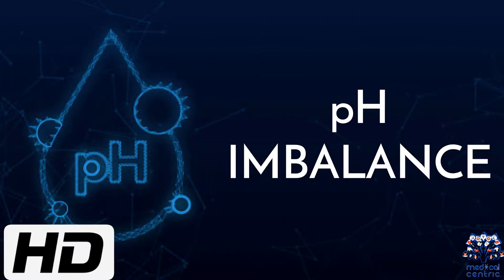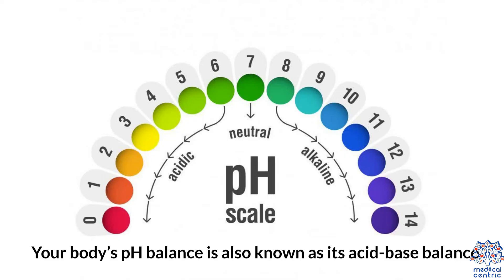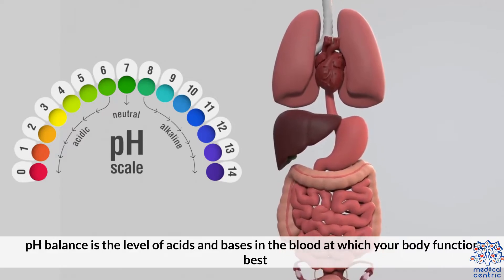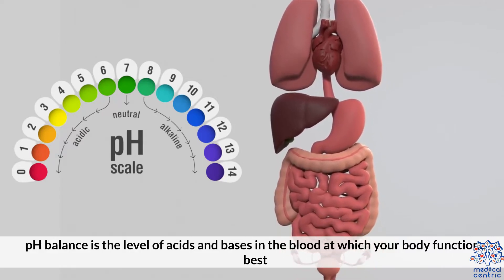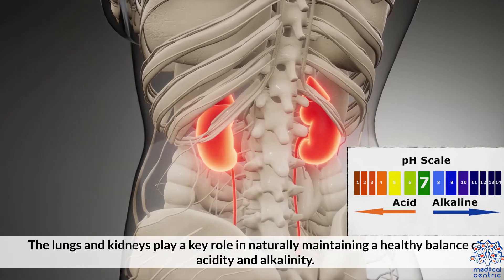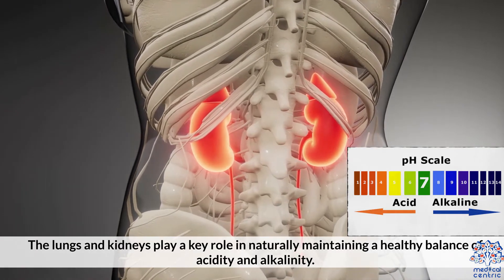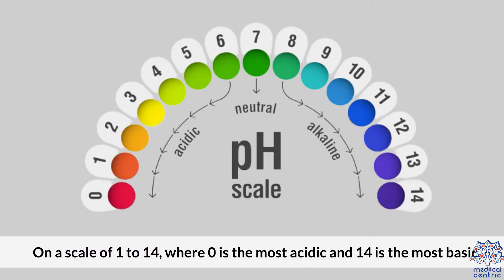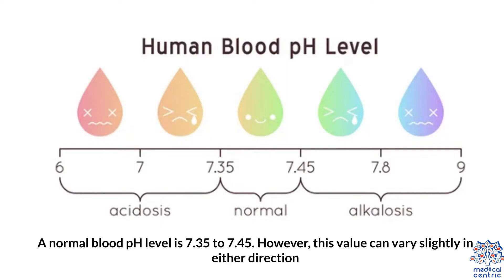Today's video topic is pH imbalance. Your body's pH balance is also known as its acid-base balance. pH balance is the level of acids and bases in the blood at which your body functions best. The lungs and the kidneys play a key role in naturally maintaining a healthy balance of acidity and alkalinity. On a scale of 1 to 14, where 0 is the most acidic and 14 is the most basic, a normal blood pH level is 7.35 to 7.45.